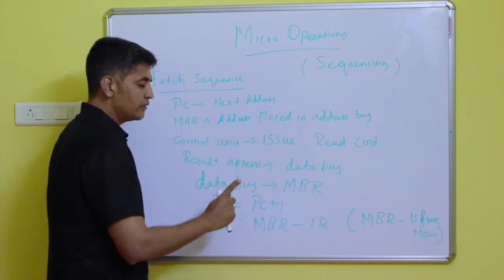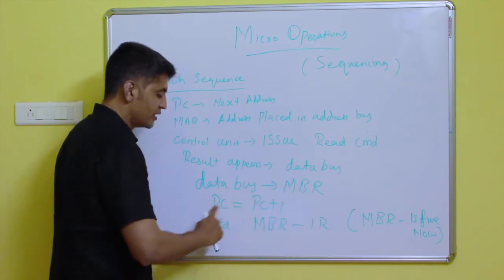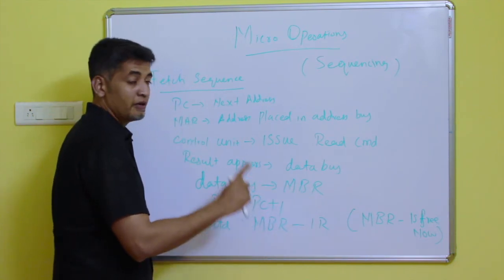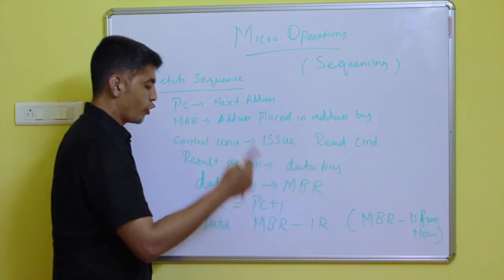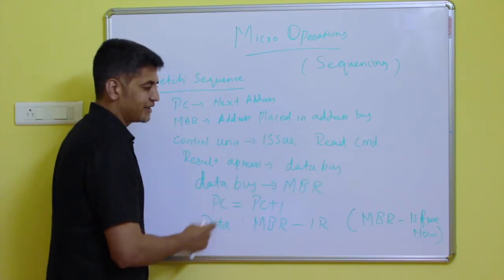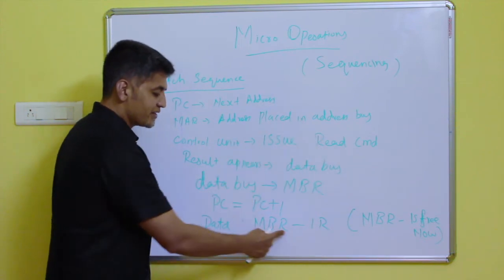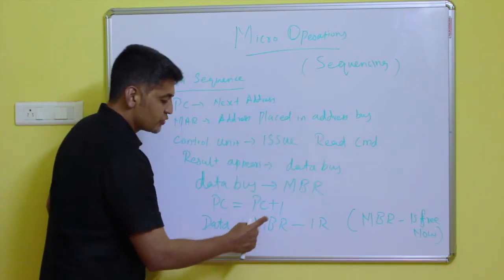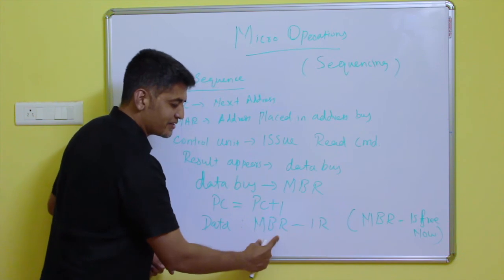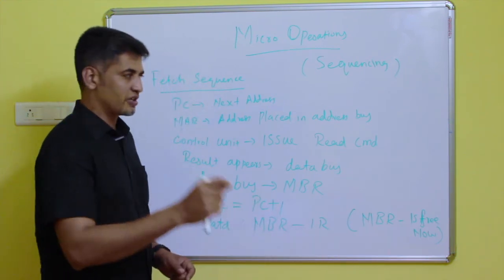After getting the data in the Memory Buffer Register, the PC value will be incremented by one for the next instruction execution. Then the data collected from the memory location, which is now in the Memory Buffer Register, will be placed in the Instruction Register.